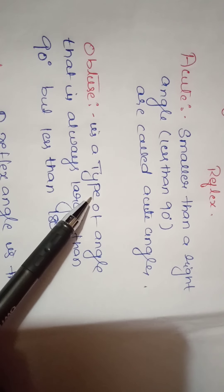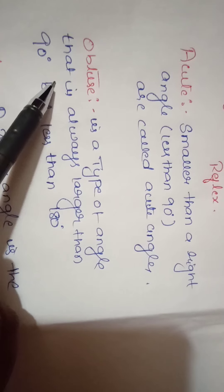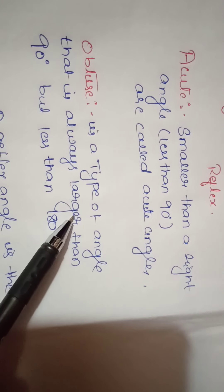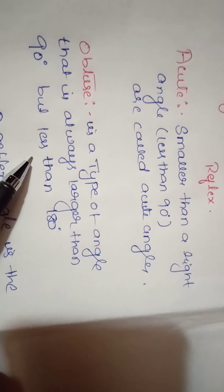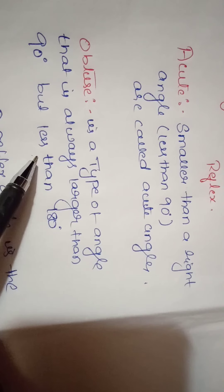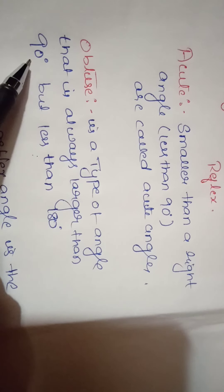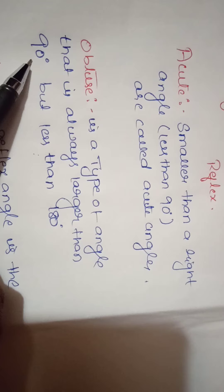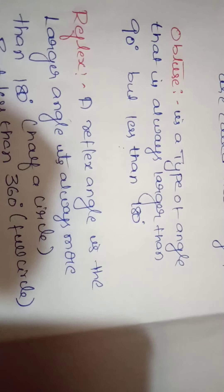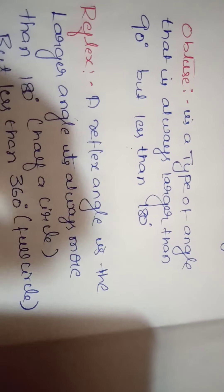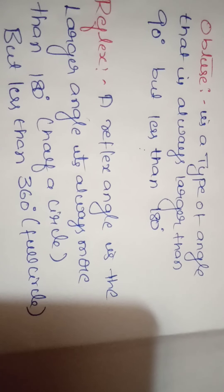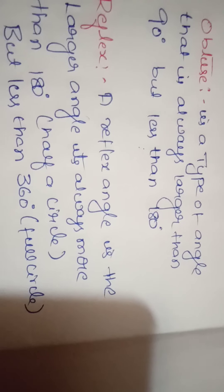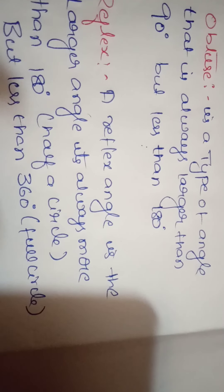Next is obtuse angle. An obtuse angle is always larger than 90 degrees but less than 180 degrees. Next is reflex angle. A reflex angle is always more than 180 degrees — more than half of a circle — but less than 360 degrees.